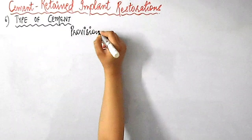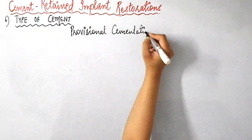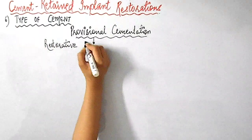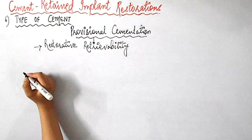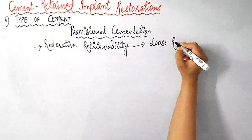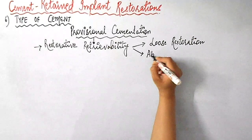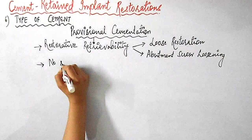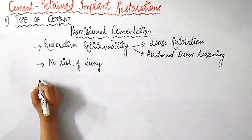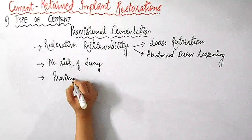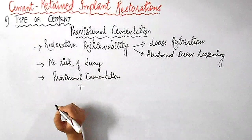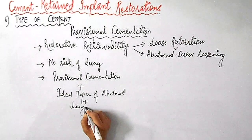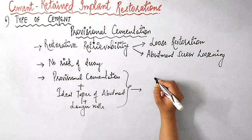Briefly, the concept of provisional cementation is considered in order to achieve restoration retrievability without endangering the implant restoration components when there is a loose restoration or when abutment screw loosening occurs. Since there is no risk of decay for the abutments, provisional cements can be used — being weaker than definitive cements, they permit retrievability of the restorations. Provisional cementation along with the ideal taper of the abutment and longer walls allows control of overall retention as well as retrievability.